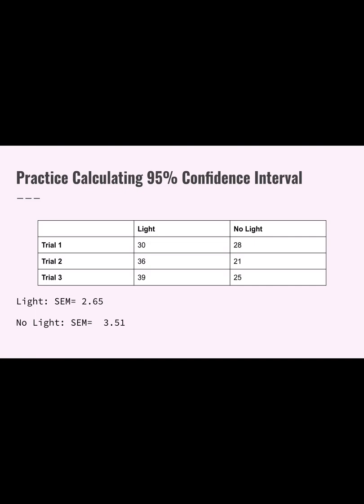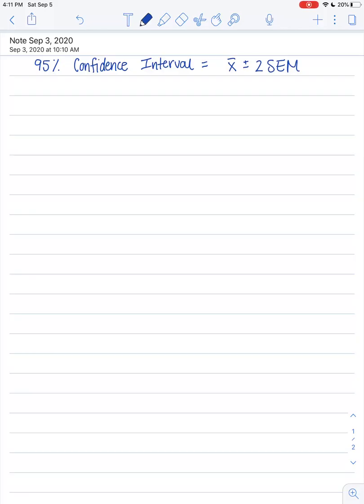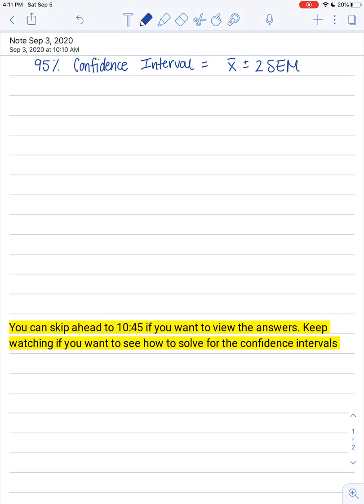In class we did practice calculating the 95% confidence intervals — if you want to try again on your own, you can go ahead and practice. Here is how you would work through that data: we need to find the averages for each group since we're trying to find the 95% confidence intervals.